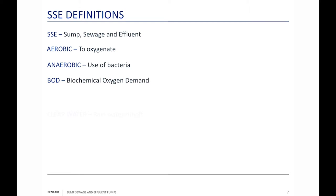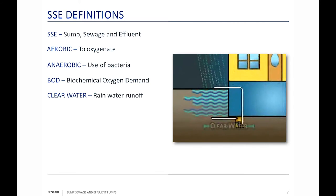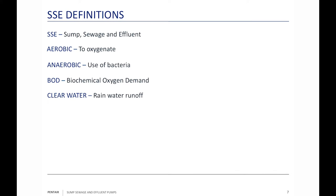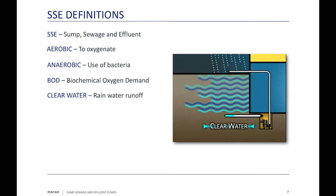BOD stands for Biochemical Oxygen Demand — it's the amount of oxygen required to kill off the bad bacteria. We call that the BOD count. Now, the first of the four types of water is clear water, defined as rainwater runoff. Here in Wisconsin, we almost all have basements or crawl spaces with a sump. That sump collects rainwater from around the house via a perforated piping system, which pulls water that seeps into the ground into the sump pit, and then we pump it away from the house.